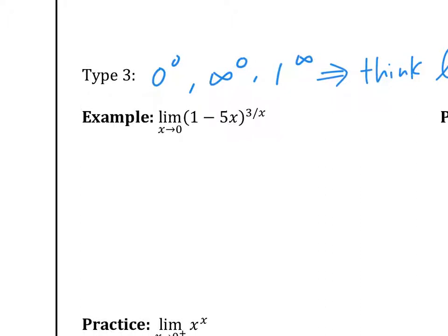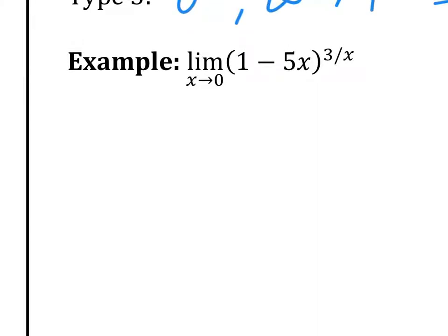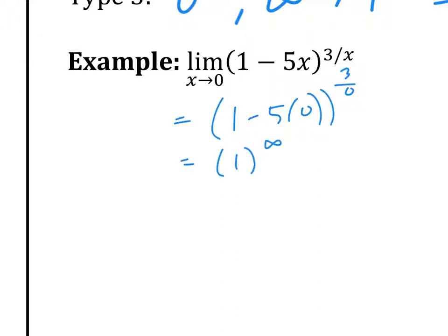For example: limit as x goes to 0 of (1 minus 5x) to the (3 over x). If we put zero in right now: (1 minus 5 times 0) to the (3 over 0), that is 1 to the infinity. The question is, is 1 to the infinity equal to 1? No, we don't know, because there is something undefined.